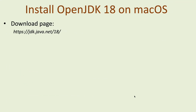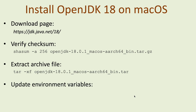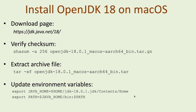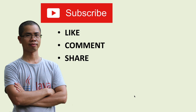So you have learned how to install OpenJDK 18 on macOS. To summarize: download the binary distribution archive file from the official download page, verify the checksum of the downloaded file, extract the archive file, and update the system environment variables. I hope you found this video helpful. Please subscribe to my channel, like, comment, and share this video. Thanks for watching.